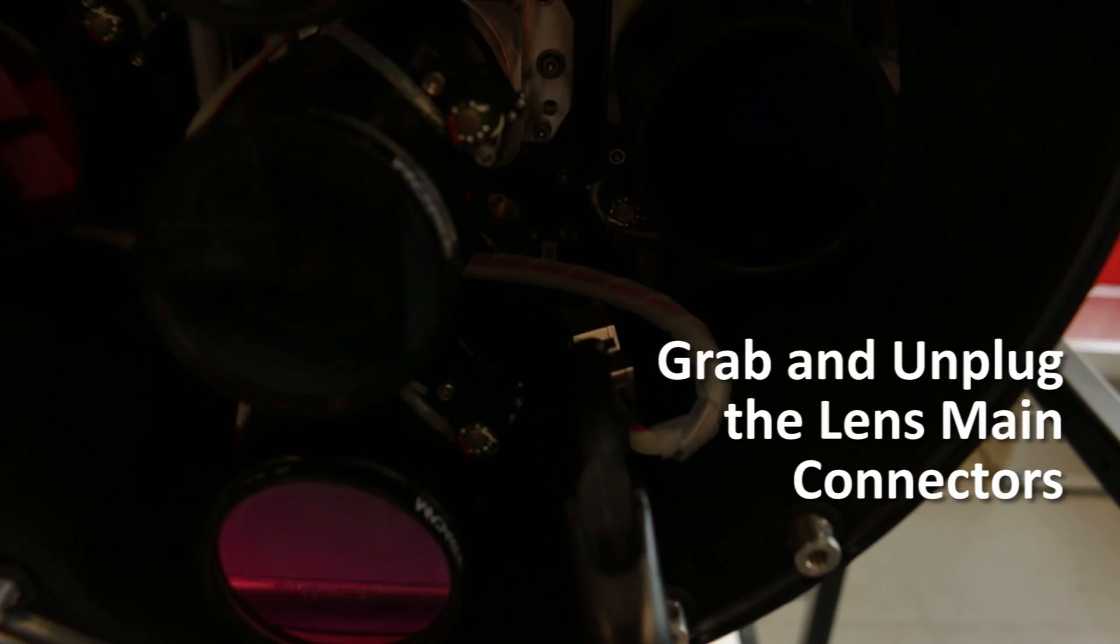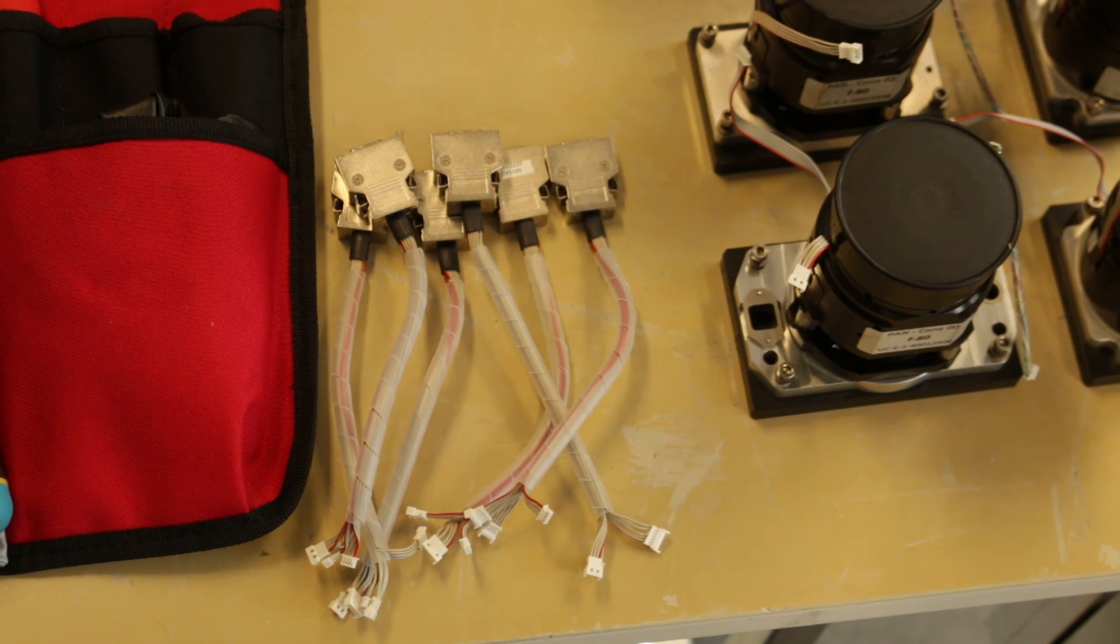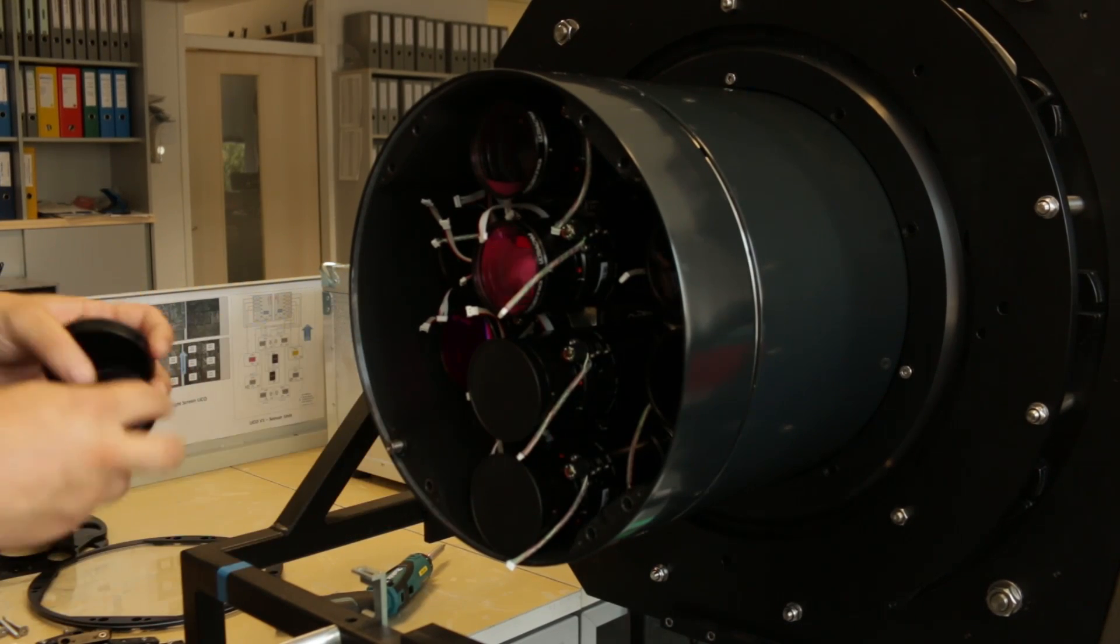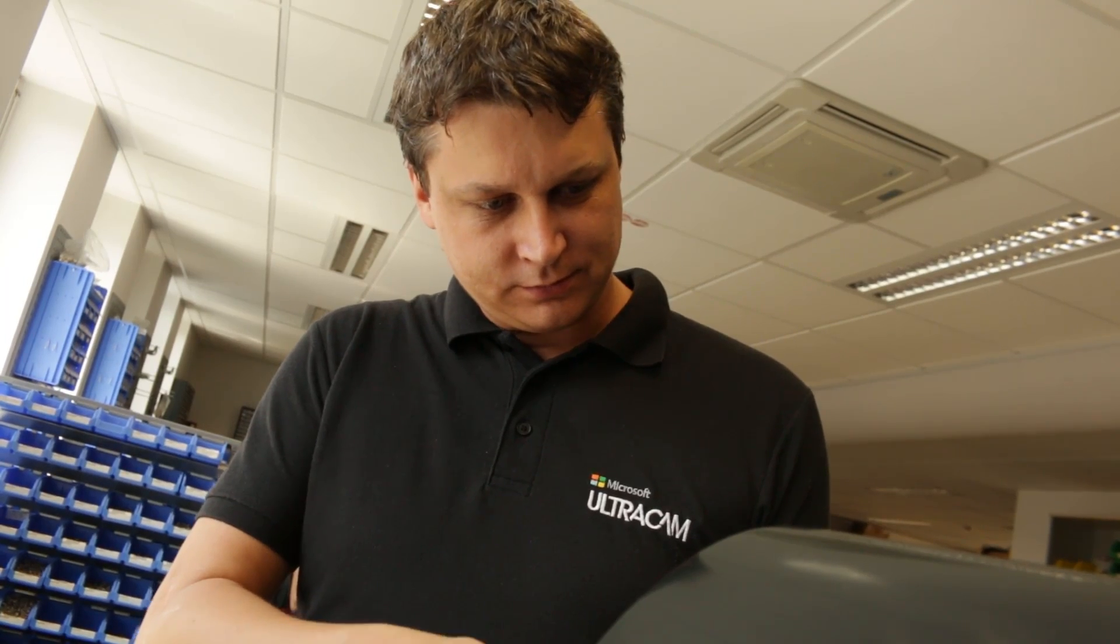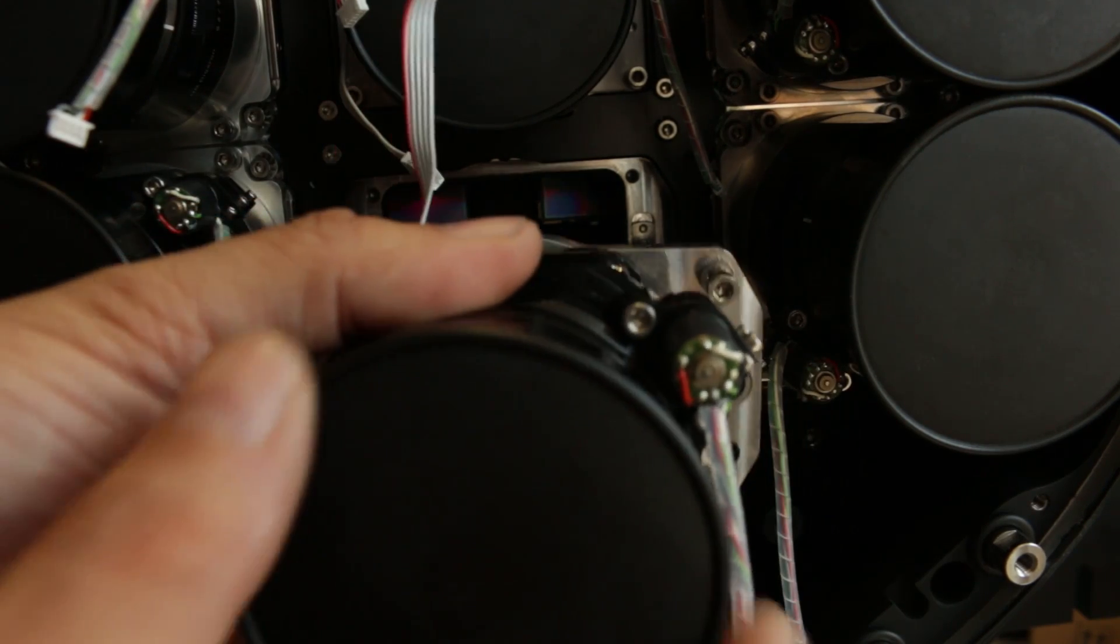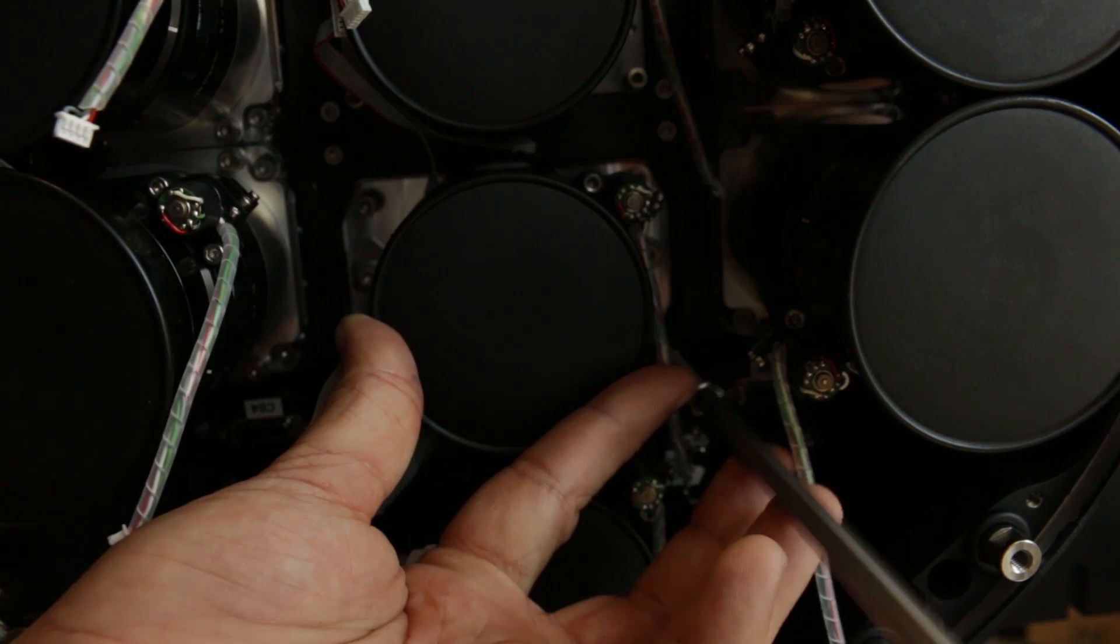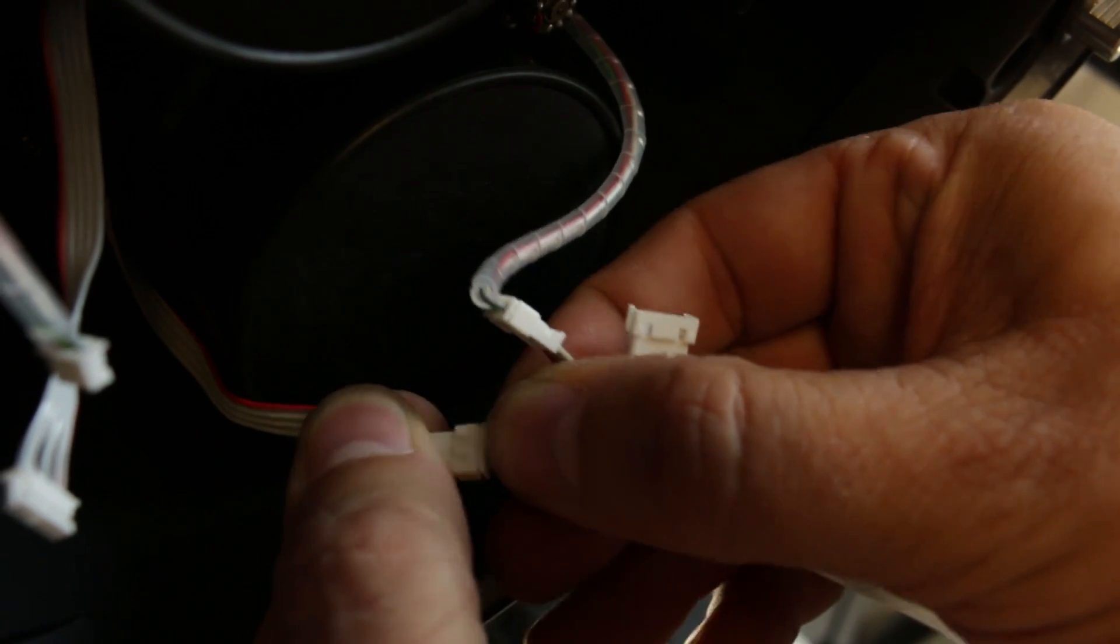Now the lens main connectors can easily be disconnected. After the cylinder extension is removed, each cone can be exchanged one by one.